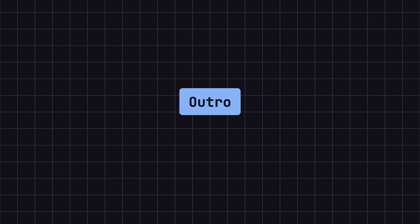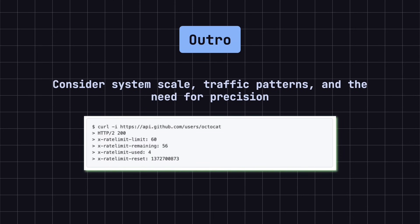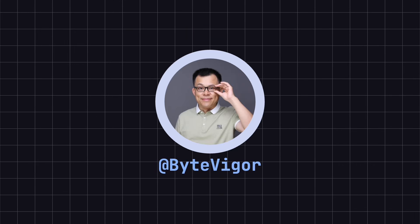In practical applications, choosing the right rate limiting algorithm requires considering factors like system scale, traffic patterns, and the need for precision. Remember, rate limiting isn't just about protecting your system — it's also important to inform API users that their requests are being limited. The best practice is to include rate limiting information in the HTTP response headers, helping users adopt appropriate retry or wait strategies and avoid unnecessary frustration. If you found this lesson helpful, don't forget to like, share, and subscribe to the ByteVigor channel to stay updated with more great content. See you in the next lesson!